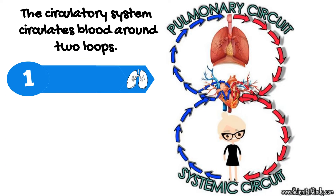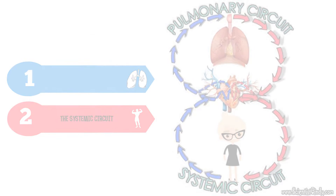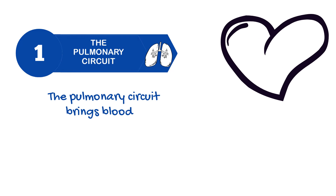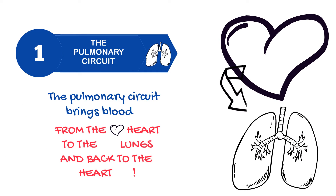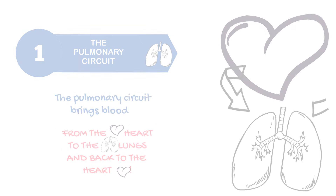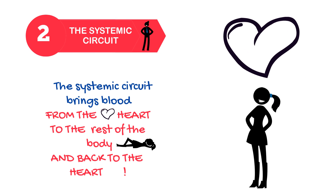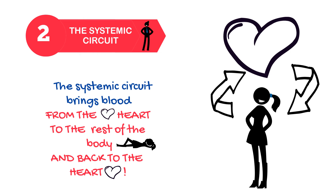The blood circulates around two loops: the pulmonary circuit and the systemic circuit. The pulmonary circuit brings the blood from the heart to the lungs and back to the heart. The systemic circuit brings blood from the heart to the rest of the body and back to the heart.